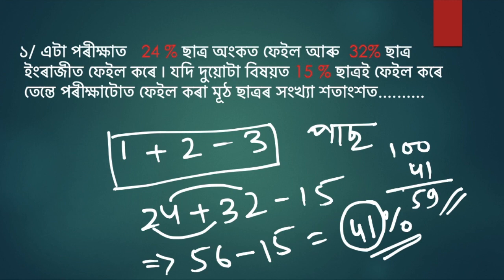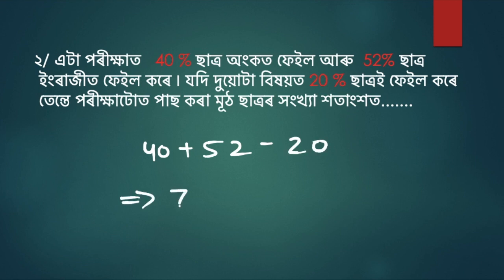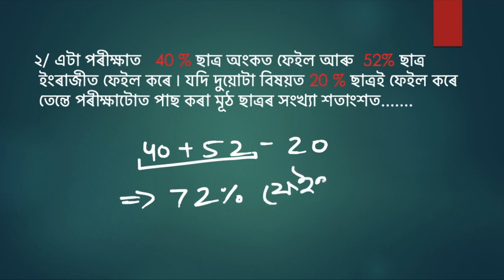We fell. If two subjects failed at 20 and passed at 73, then passed at 77. How much total? 40 plus 52 minus 20 — that gives 72. So 92 minus 20 is 72. 72 percent — so they failed. What did we pass? Failed.